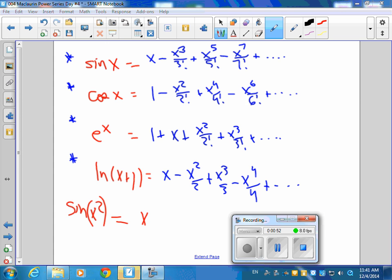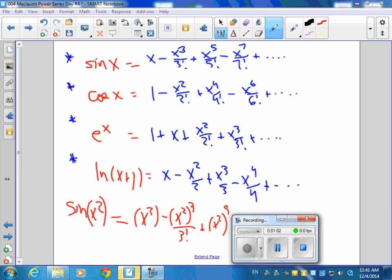Wherever you see an x, put in an x squared. So now it's going to be x squared cubed over 3 factorial plus x squared to the 5th over 5 factorial plus x squared to the... Oh I see, to the minus to the 7th over 7 factorial.